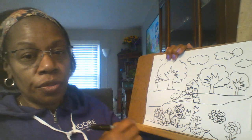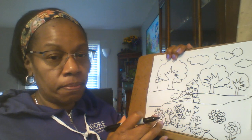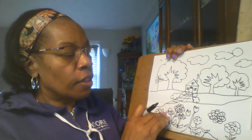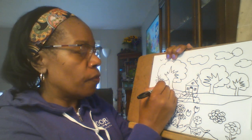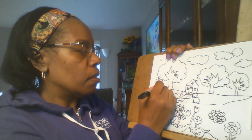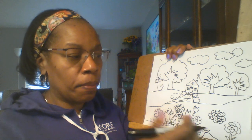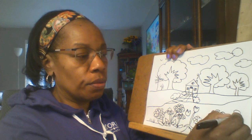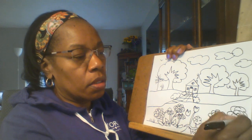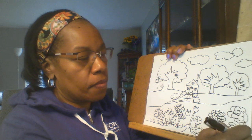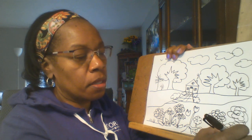Now the closer something gets to you, the bigger it gets. So the things in the background will be tiny because they're far away. Things in the foreground will look bigger because they're closer to you. And things in the middle will be somewhere in the middle.